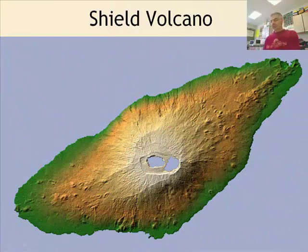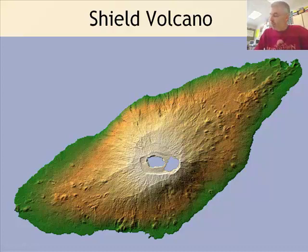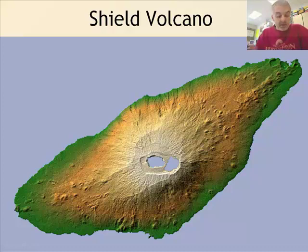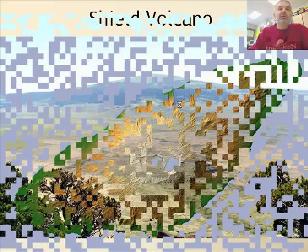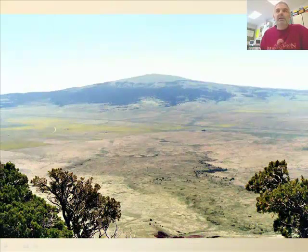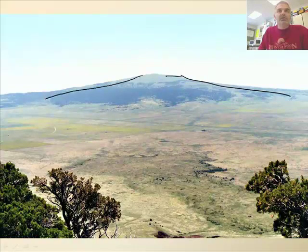A shield volcano is a volcano that has gentle slopes, like a warrior's shield, hence the name. Shield volcanoes are common in ocean hotspots like Hawaii and Iceland. The base of a shield volcano is huge, and they actually take up much more land area than other types. The island of Hawaii goes all the way to the ocean floor, down to 14,000 feet. Here's Hawaii — notice the slopes are not steep.